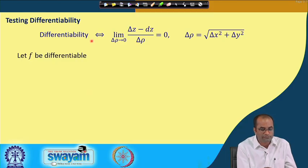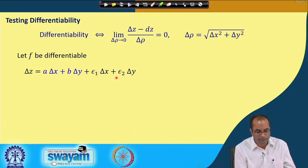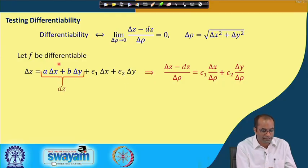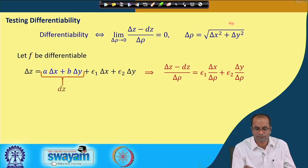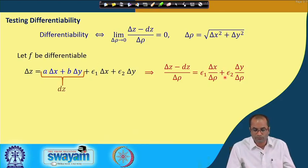We now show that if f is differentiable, this limit must be 0. If f is differentiable, we can express δz as a·δx + b·δy + ε₁·δx + ε₂·δy. The term a·δx + b·δy is the differential dz. Taking dz to the left-hand side and dividing by δρ = √(δx² + δy²), the right-hand side becomes ε₁·(δx/δρ) + ε₂·(δy/δρ).